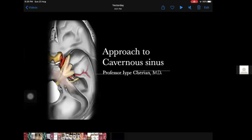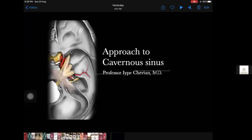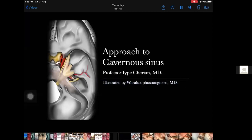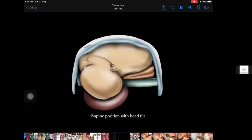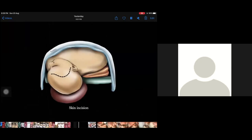We're going to start with some anatomy first. These first few pictures were completely done by Dr. Voralex, who is also a neurosurgeon and a very talented artist. So for a trans-cavernous approach or for going into the Cavernous Sinus, this is the incision — a usual frontotemporal incision is what we use.